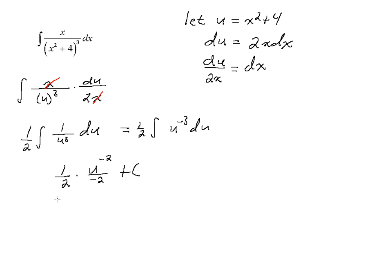And then subbing back in for u, u is x squared plus 4. And don't forget that it's to the negative 2 power. And then we could rewrite that if we wanted to, although that's pretty good right there, as a negative 1 over 4 times x squared plus 4 squared plus c.